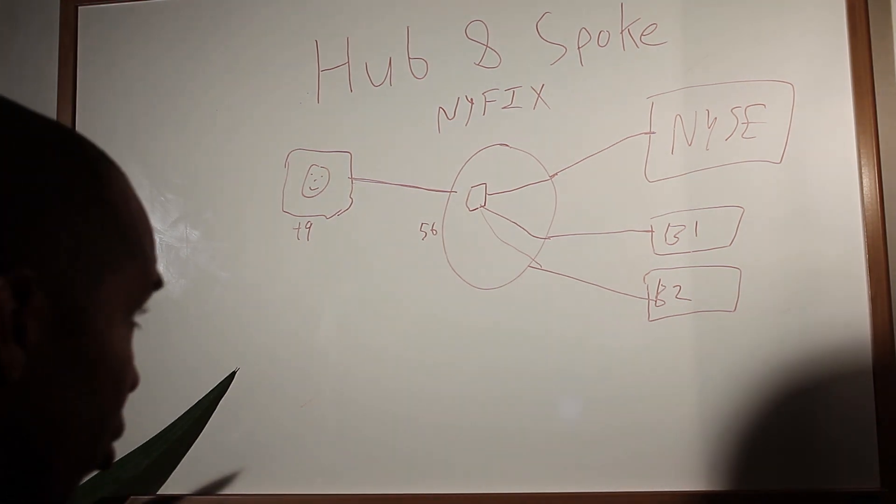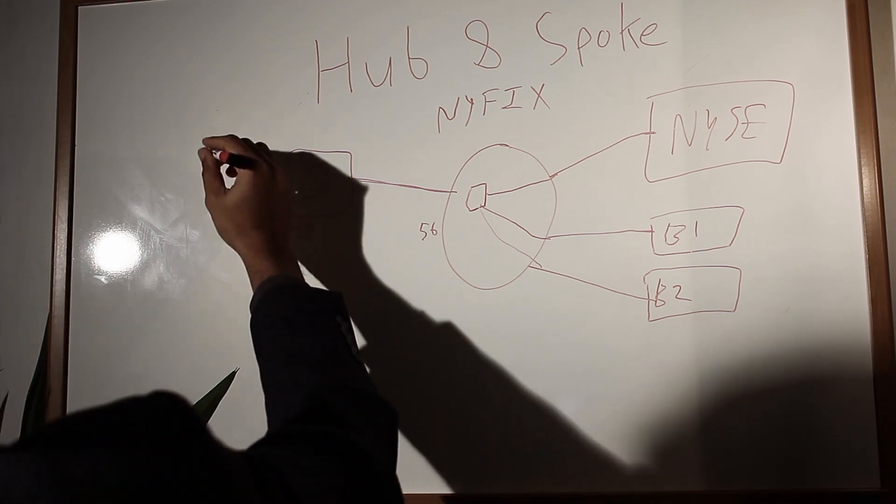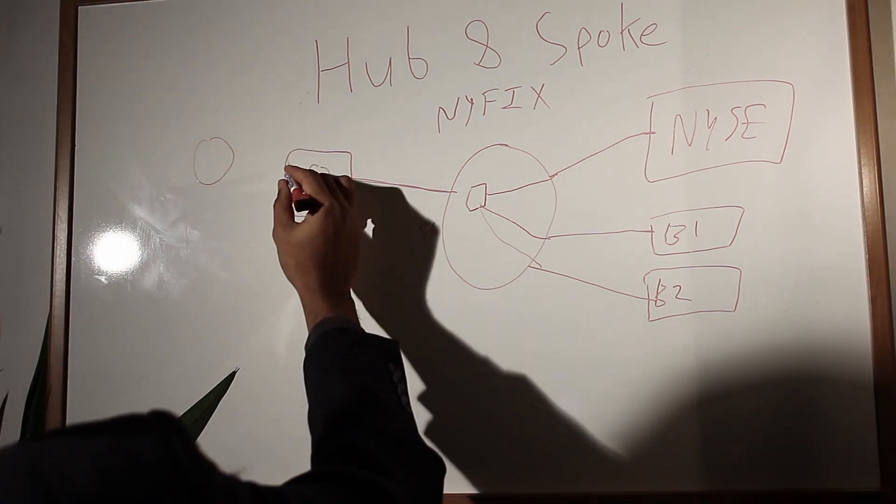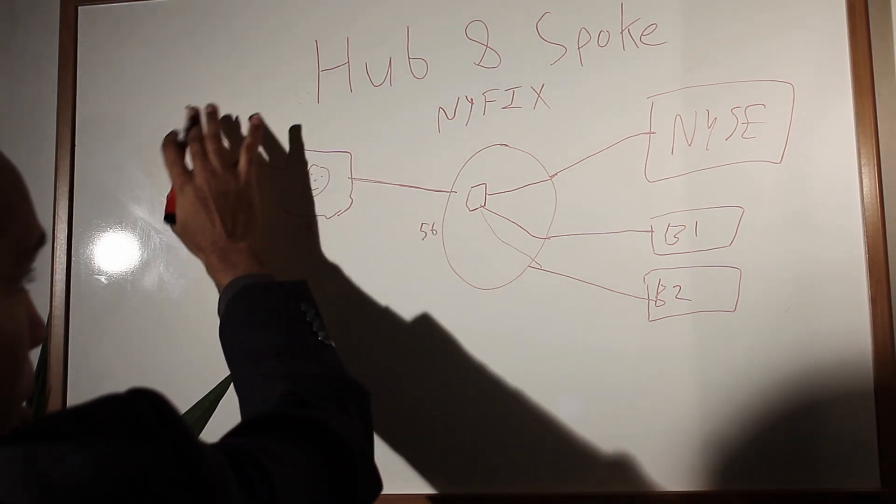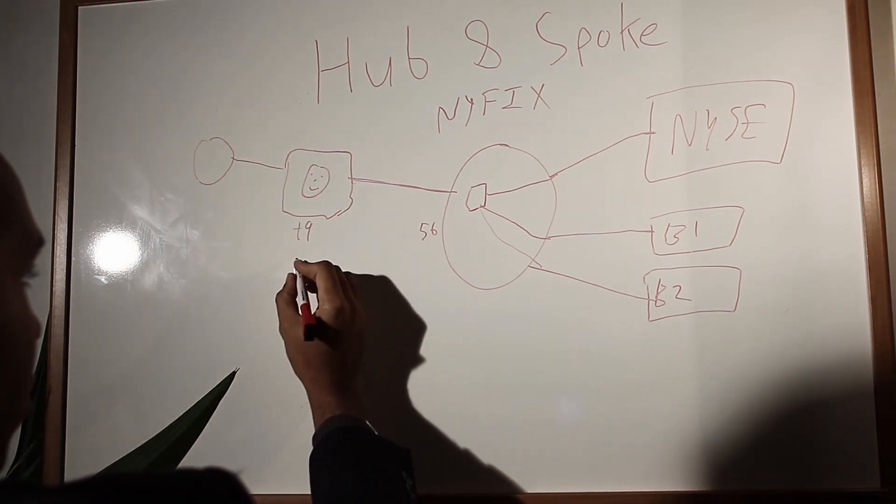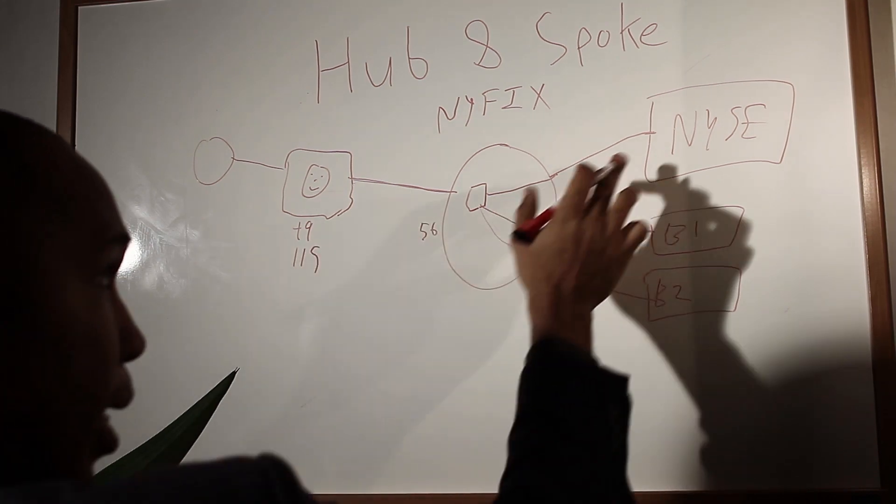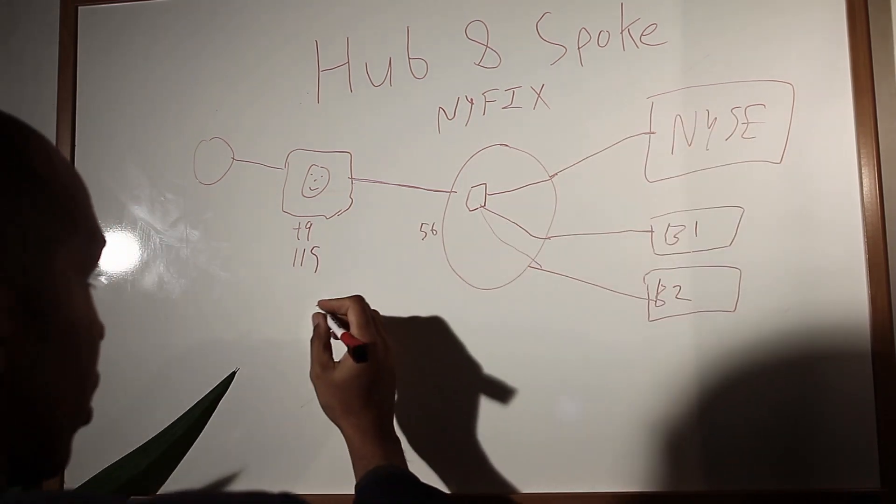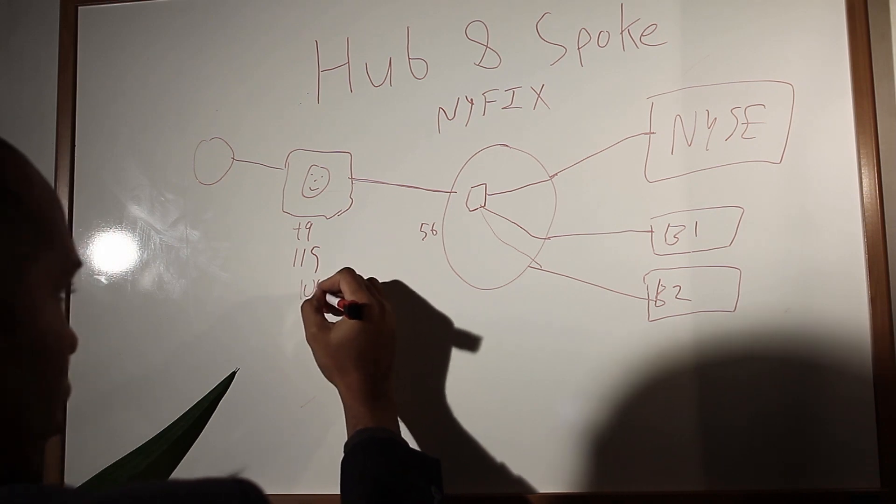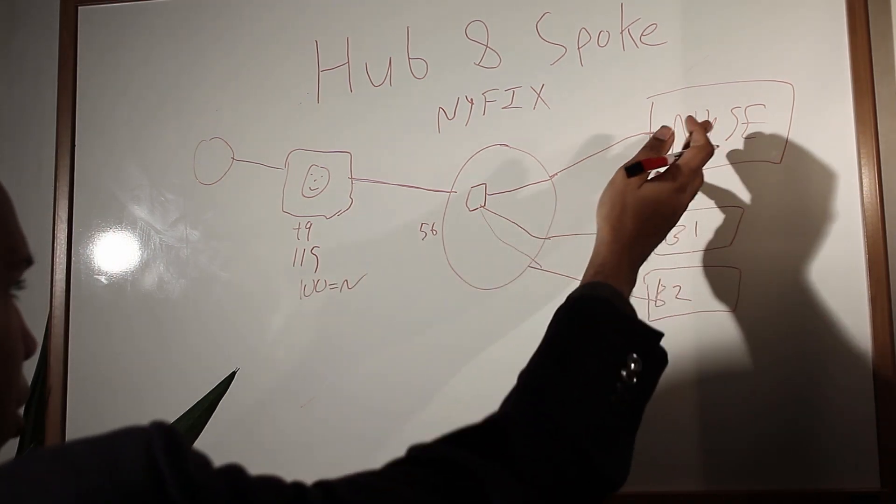But then I'm also going to say potentially an on behalf of, maybe I'm sending an order on behalf of my client. So I could even be using a completely different system over here. They send an order to me, and I'm sending the order on behalf of, but how do I get there? I can get there with a tag 100, like we said before, I can say 100 equals whatever the tag is for New York Stock Exchange.